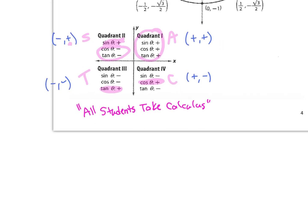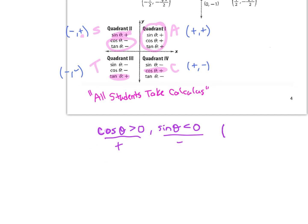As an example: if cosine is positive and sine is negative, what quadrant are we in? Cosine is positive in Q1 and Q4, but sine being negative rules out Q1. So we must be in quadrant 4.